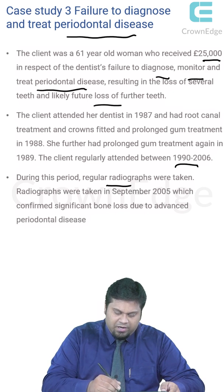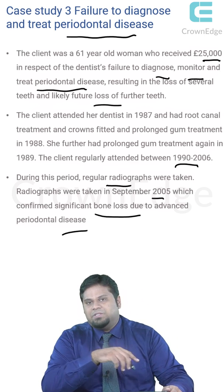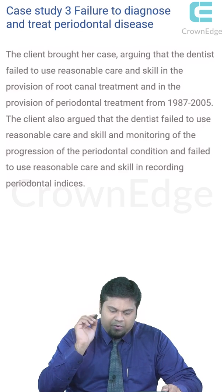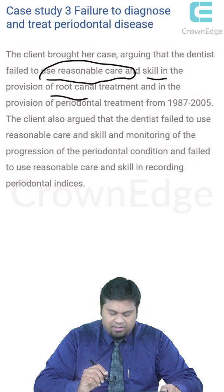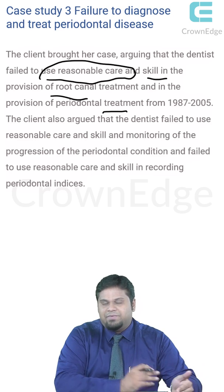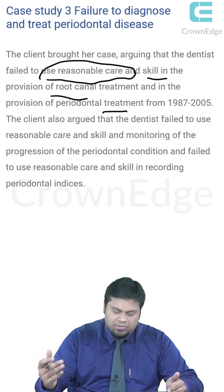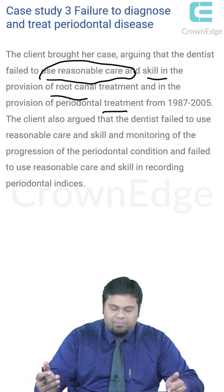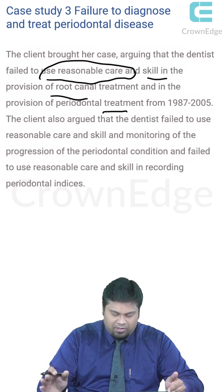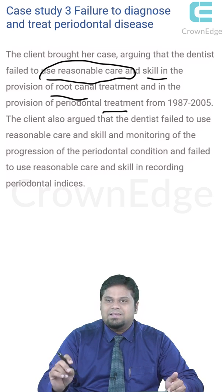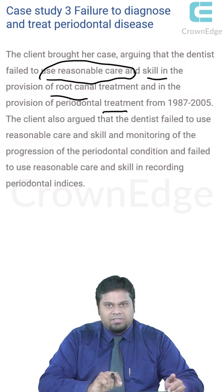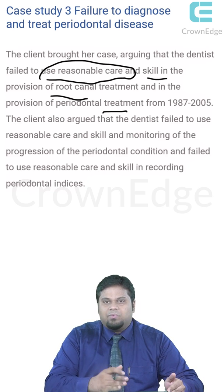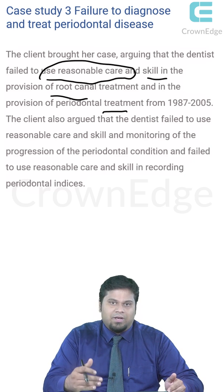Throughout this period, regular radiographs were taken repeatedly. X-rays taken in 2005 confirmed significant bone loss due to advanced periodontal destruction. The client argued that the dentist failed to use reasonable care and skill in the provision of root canal treatment and periodontal treatment from 1987 to 2005, and also failed to monitor the progression of dental disease or record the relevant periodontal indices. This is a classical example where not detecting periodontal disease at the initial stage compounds the condition repeatedly, pushing the patient further into a vulnerable position.